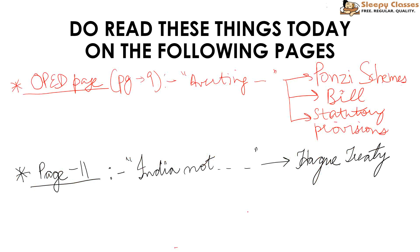And then there is oped page, the page 9. You will see that it is in the center but it is in the down. There are 3 articles in the center. There is a headline Averting Ponzi Scheme something. You have to make 3 notes. 1. Google and see that Ponzi Scheme.